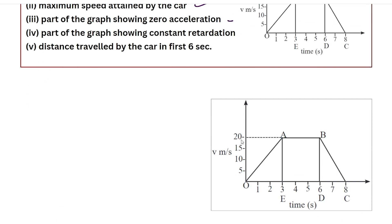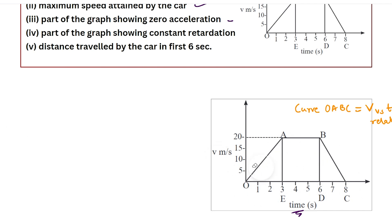Whenever we see a graph, the first thing to do is understand what it represents. On the horizontal axis we have the quantity time, and on the vertical axis we have the quantity velocity. This tells us it's a velocity-time graph. In the graph we have a curve between points O, A, B, and C, and this curve shows our velocity versus time relationship.